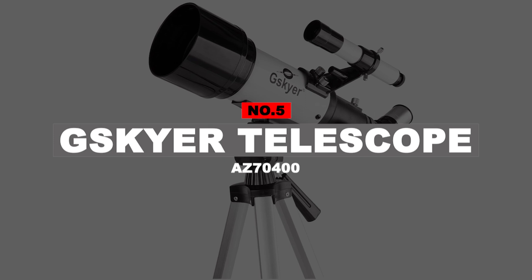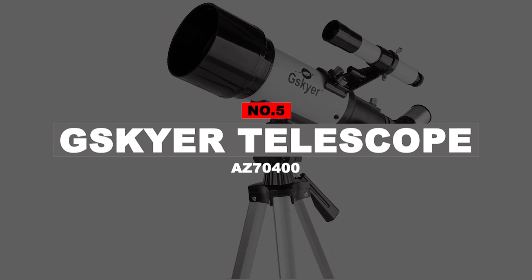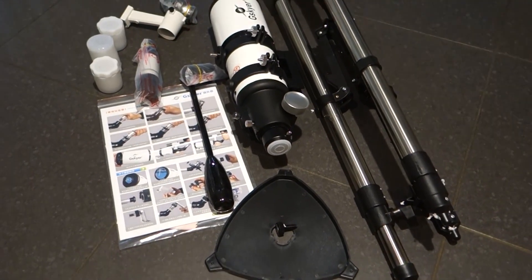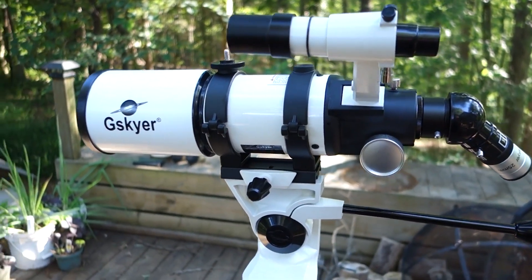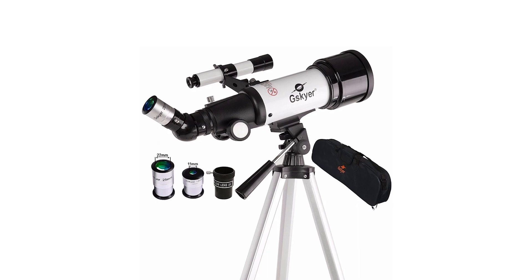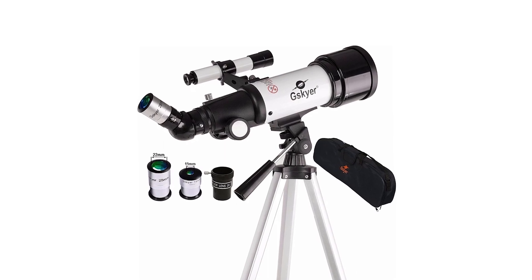Number 5. G-Skyer Telescope AZ-70400. If you're just getting started with astronomy, you don't need to spend a ton of money. You actually get a lot for your money with this package. It comes with two eyepieces, a parallel lens, a small finder scope, and a tripod mount.